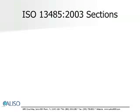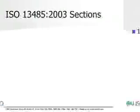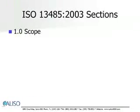Although sections 1, 2, and 3 do not contain requirements, a brief description is included in this presentation. Section 1.0 is the scope. The primary objective of the standard is to facilitate harmonized medical device regulatory requirements for quality management systems. This section also discusses acceptable exclusions from the quality management system. Requirements in clause 7 that are not applicable to a specific organization may be excluded, and details including justifications of the exclusion need to be in the scope section of the quality manual.